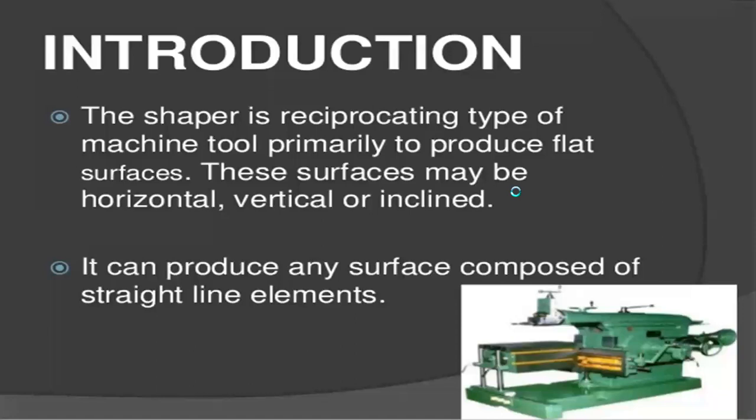The shaper machine is used for surface finishing operations. Suppose the workpiece has irregular surfaces — we need to remove those irregular surfaces using the surface finishing operation. The shaper machine can produce any surface composed of straight line elements, so any type of surface can be finished using this machine.